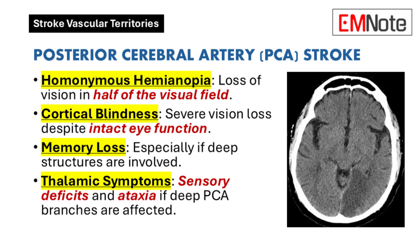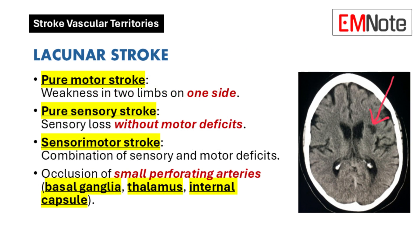Now for some of the trickier cases — lacunar strokes. These are caused by blockages in tiny arteries deep within the brain. You might see pure motor or pure sensory deficits, meaning just weakness or just sensory loss, without the other cognitive symptoms. The effects can be very specific, and the symptoms really depend on the precise location of the blockage within these deep brain structures.